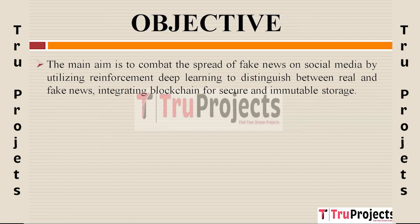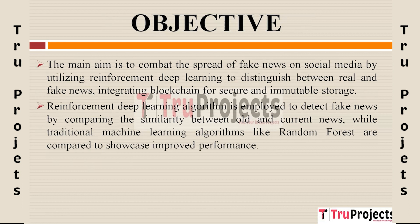The primary objective is to combat the dissemination of fake news on social media. This is achieved by leveraging reinforcement deep learning, a technique that distinguishes between genuine and fabricated news. The project utilizes a reinforcement deep learning algorithm to discern fake news by comparing the similarity between past and present news articles, proving more effective than traditional algorithms like random forest with improved performance and accuracy.